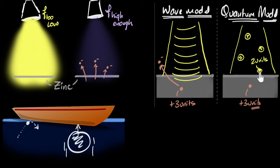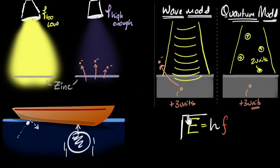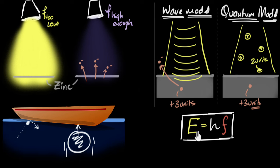So what does the energy of a photon depend on? From Planck's equation, the energy of a photon equals Planck's constant h times the frequency of light. So more frequency means more energy per photon. Now can you pause the video and explain why we don't see photoelectric effect with bright visible light but we do see it with dim ultraviolet light?